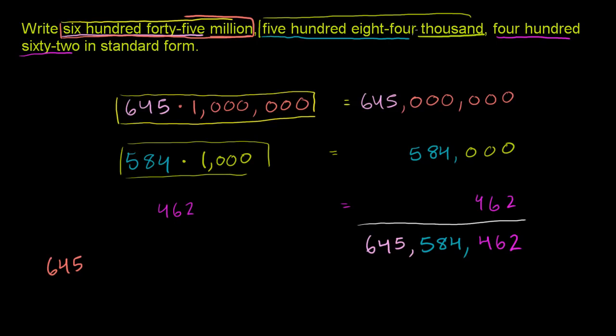And then you say 584,000. And so then you have your 584,000. So then you write that down. 584,000, keeping in mind that you're going to need three digits to the right of that. And so if they didn't tell us 462, we would just put three zeros here. And that would also fulfill the six zeros we need behind 645 million. But then they tell us 462, so we just write that right here. 462.